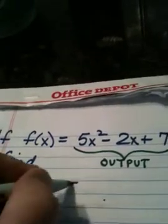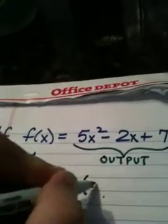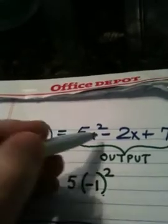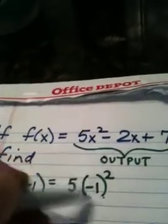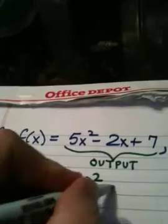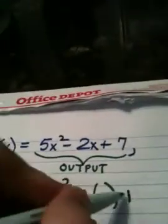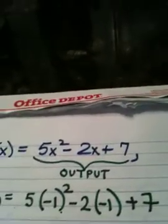So I would have 5, negative 1 being squared, you see that x is being squared all of it, a minus 2 and then a negative 1, and then a plus 7. I teach my students, when you're plugging into a function, whatever you're feeding the function,